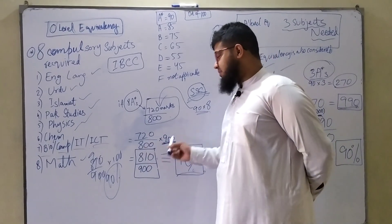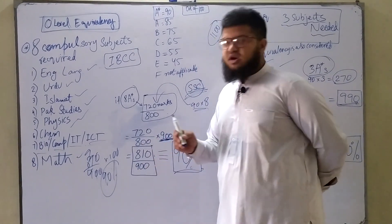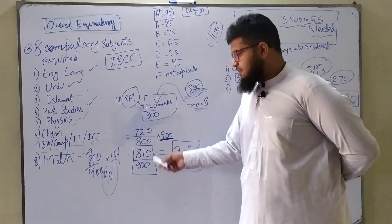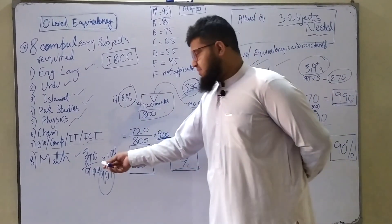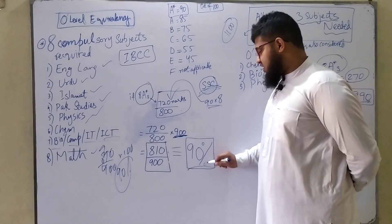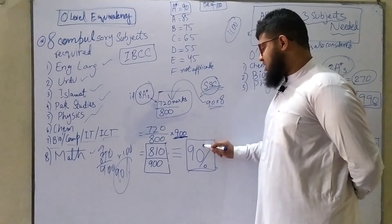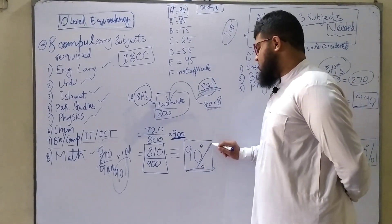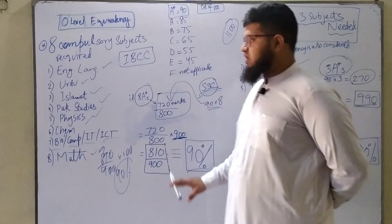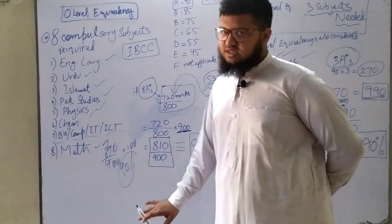Now apply this: 810 out of 900 will come. Now calculate the percentage: times 100, and your answer will be 90. 90% that you have, this will be your O-levels equivalency. This is how you calculate your O-level equivalency, simple.